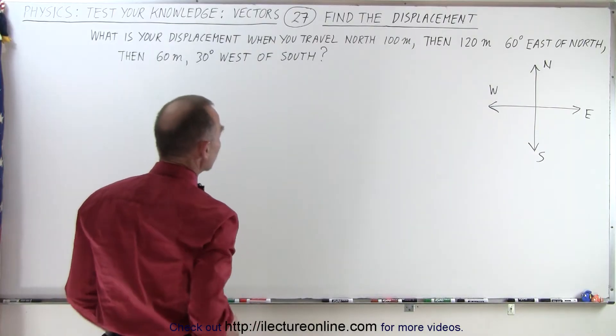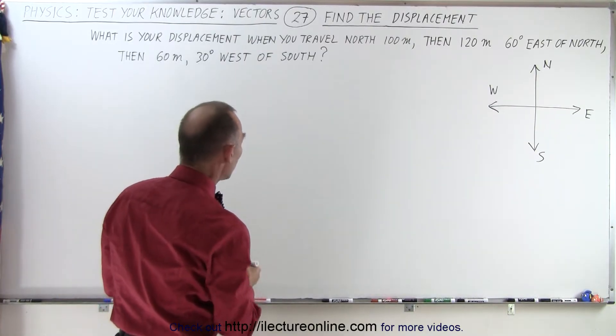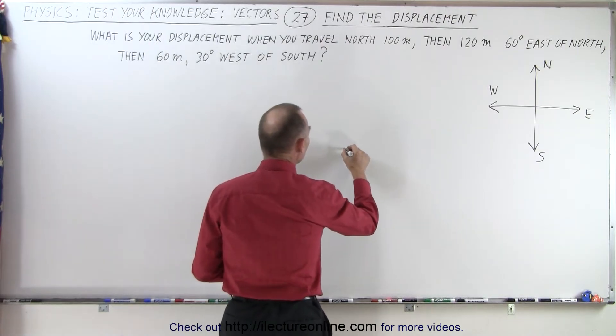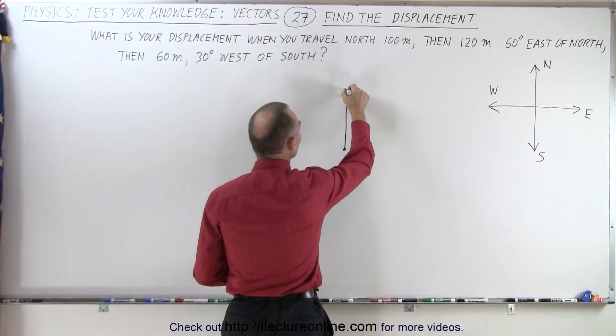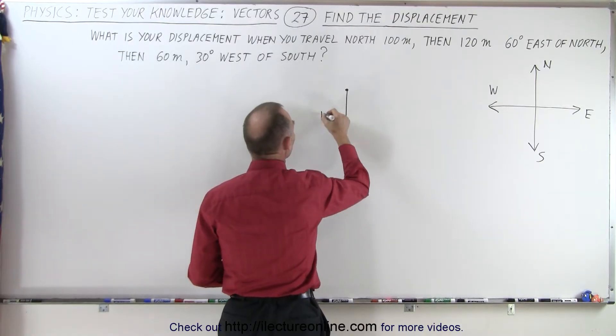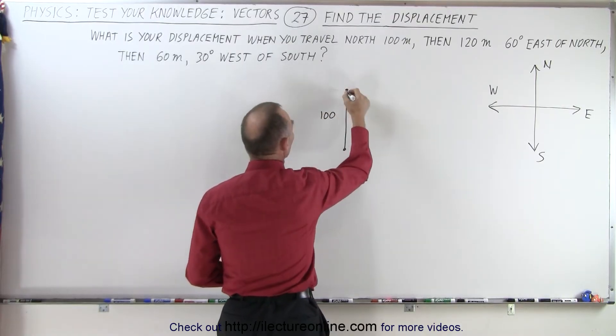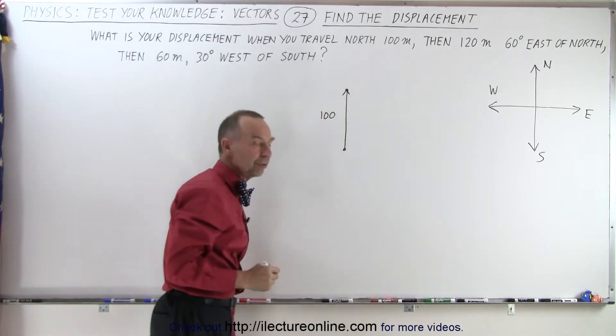So the first travel is 100 meters directly north. So let's pick a point, the starting point is right here, and we go 100 meters directly north. So from there to there that's 100 meters, and you go north, that's your first travel.